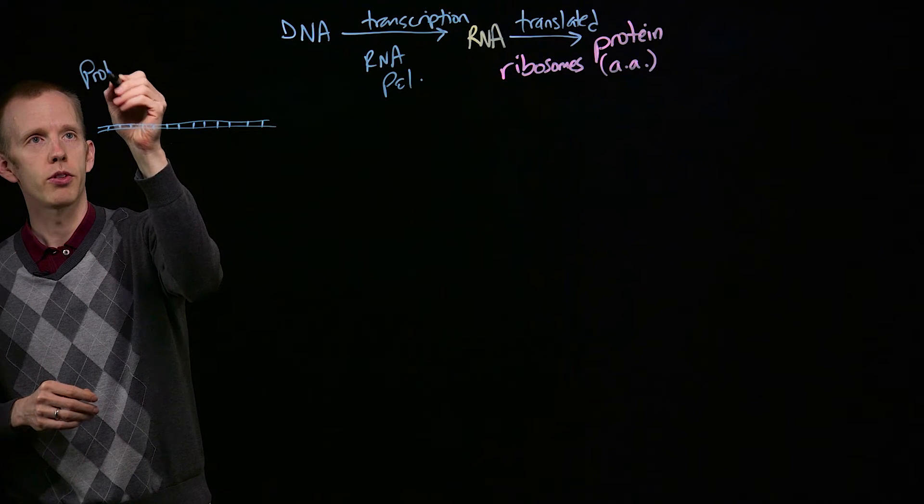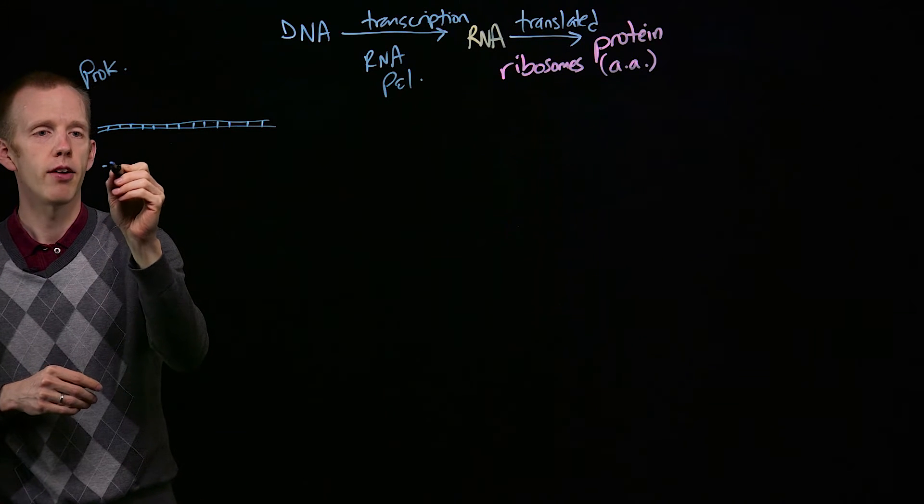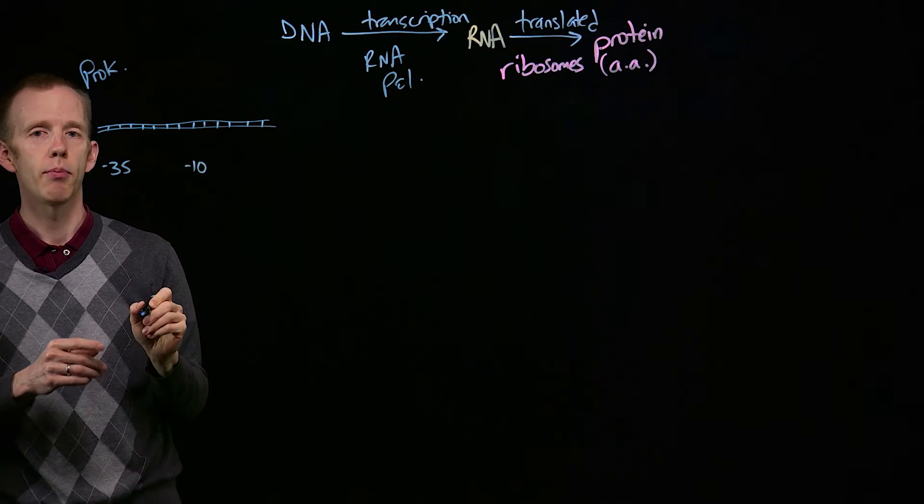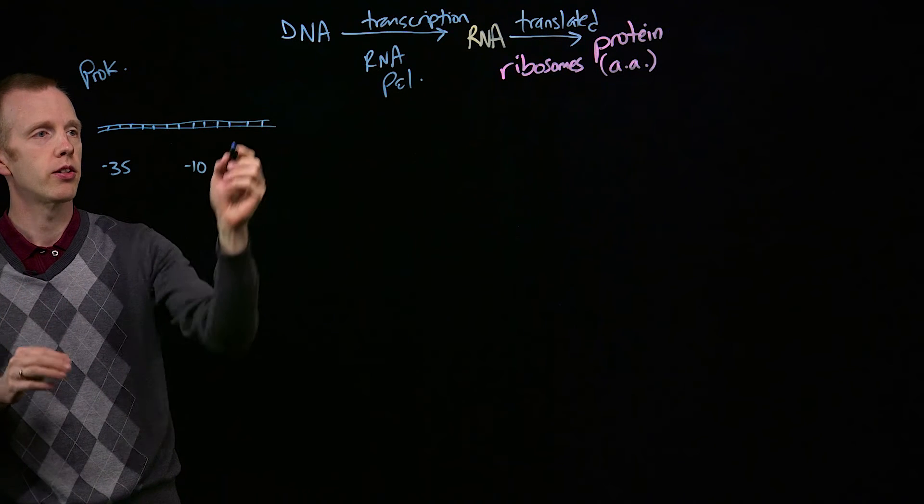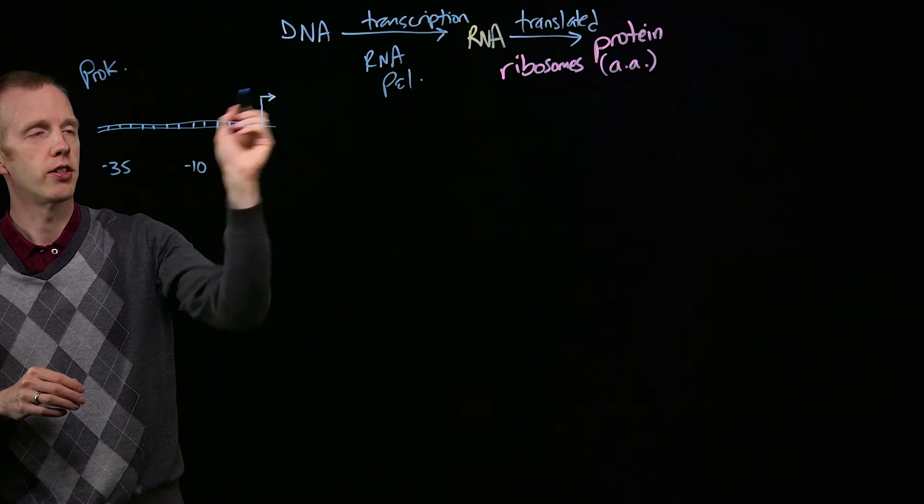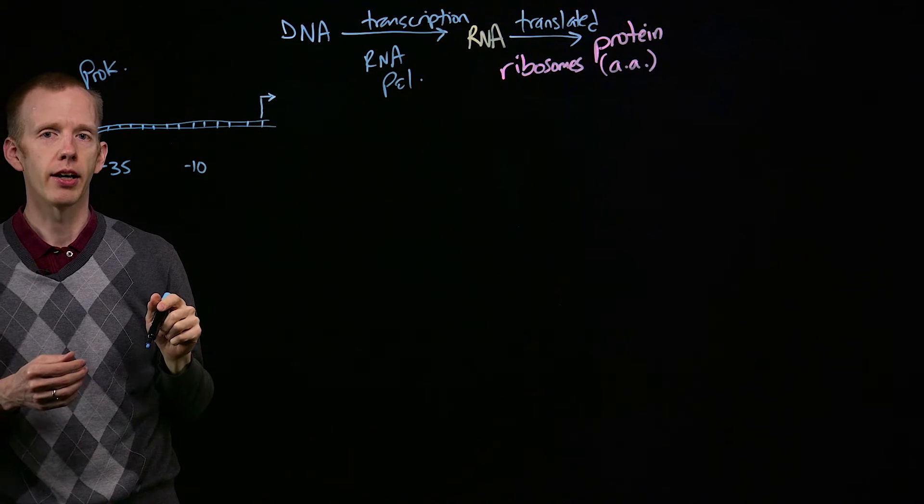In prokaryotes, there are particular sequences that are 35 nucleotides and 10 nucleotides upstream of where transcription begins. And the transcription start site, in geneticists' diagram transcription, is usually using this right-angled arrow.